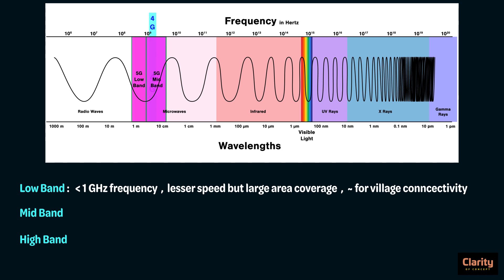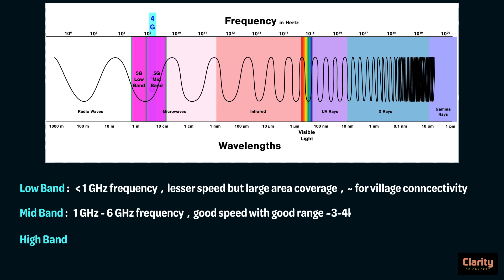Mid band uses 1 GHz to 6 GHz frequency band. This has very good speed and reliable distance coverage — you can expect up to 3 to 4 km range. This is a good band and it works both indoors and outdoors.